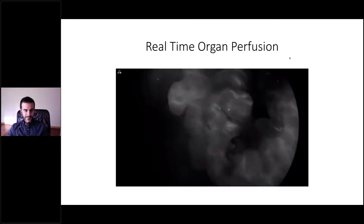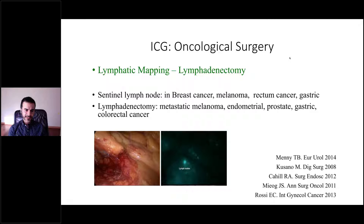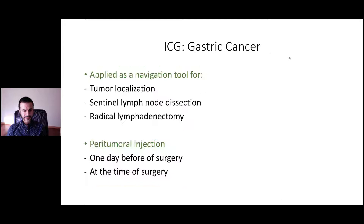Regarding oncological surgery, ICG is being used in cancer surgery for sentinel lymph node detection in breast cancer, melanoma, rectum, and gastric cancer, and also as a lymphadenectomy navigation tool itself. In gastric cancer surgery, ICG is mainly applied for tumor localization, sentinel lymph node dissection, and radical lymphadenectomy, basically through peritumoral injection of ICG performed one day before surgery or at the time of surgery.